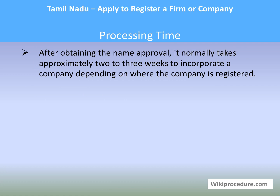Processing time: After obtaining name approval, it normally takes approximately two to three weeks to incorporate a company, depending on where the company is registered. The applicant should stay in touch with their Chartered Accountant's office to provide feedback or any additional details required until the certificate is received.